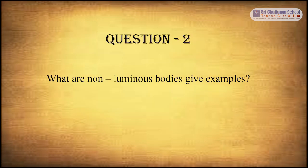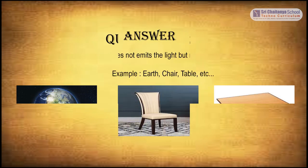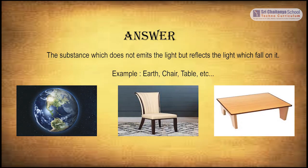The second question is: what are non-luminous bodies? Give examples. The answer is: the substance which does not emit light but reflects the light which falls on it. For example, the Earth, a chair, a table, and so on.